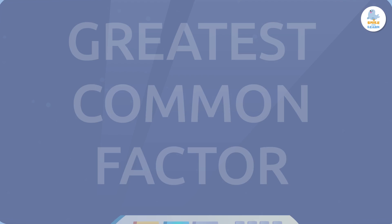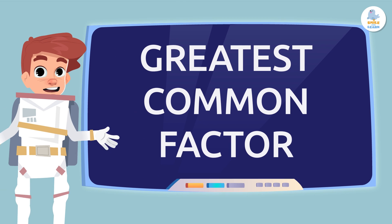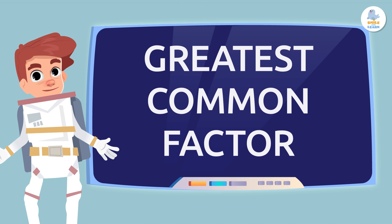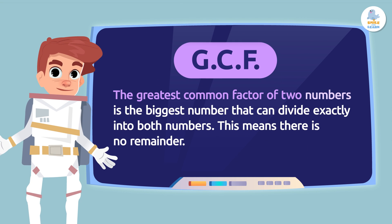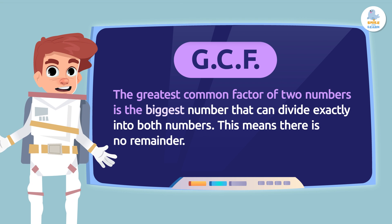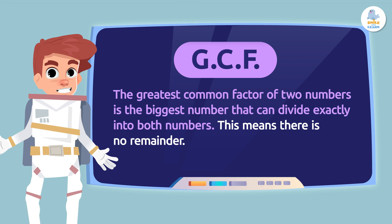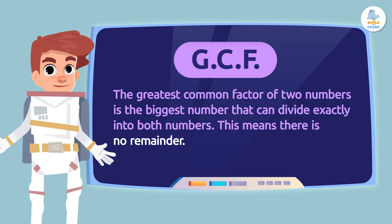So back to our class today. What is the greatest common factor? The greatest common factor of two numbers is the biggest number that can divide exactly into both numbers — meaning there is no remainder.